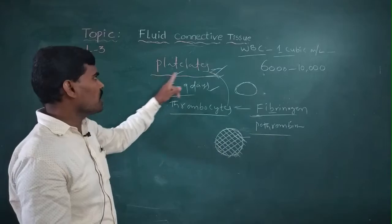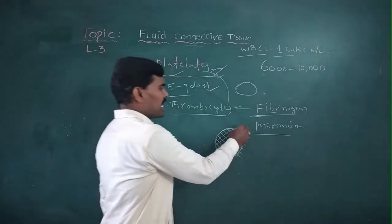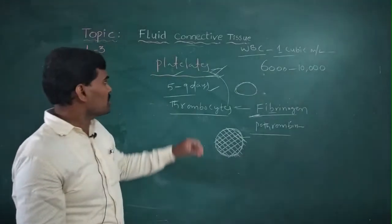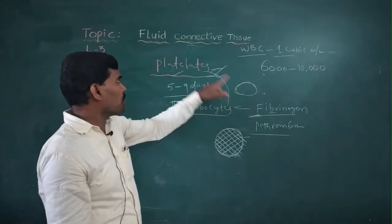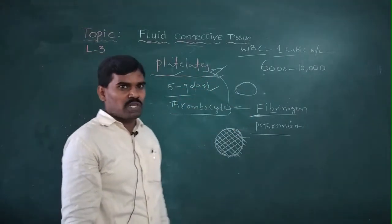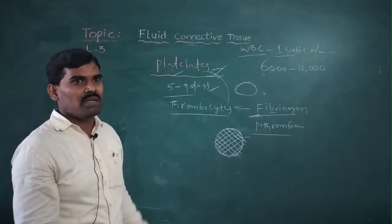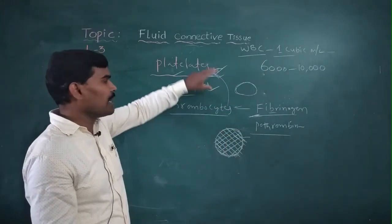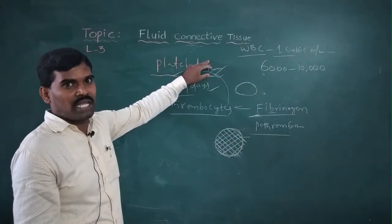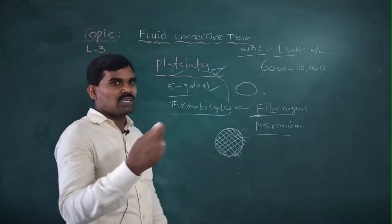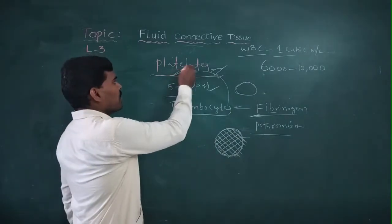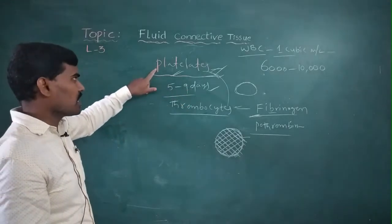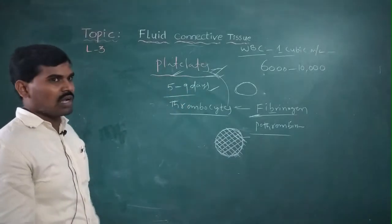Mainly, with the help of platelets and anticoagulant reactions, at any injury spot the bleeding is stopped. The platelets have a lifespan of 5 to 9 days and are commonly called thrombocytes.